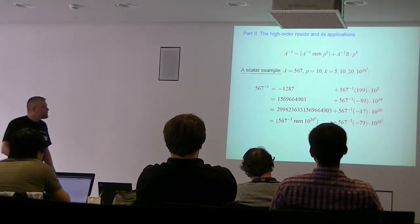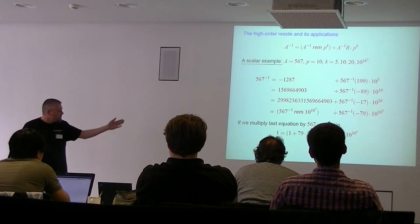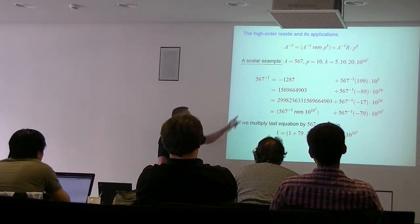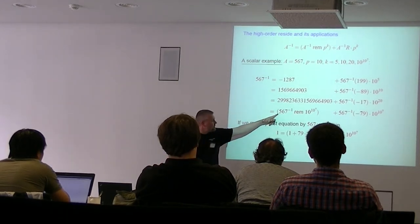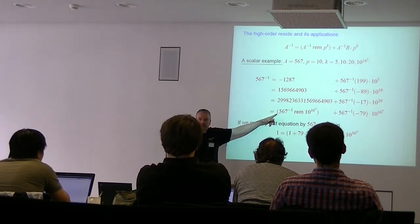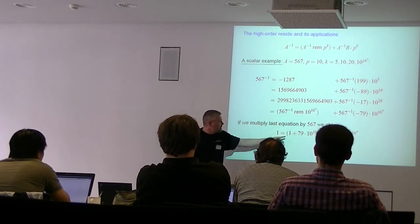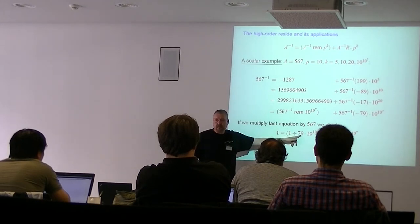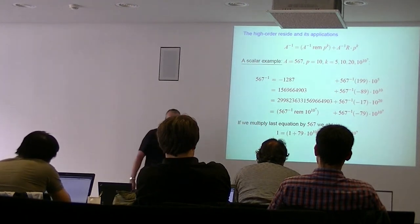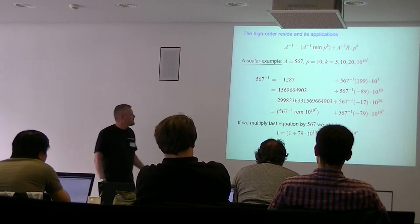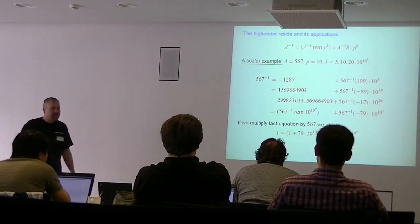Let's look at the matrix example and why the residue is small. If I multiply the equation by 567, the inverse modulo 10^(10^7) times 567 should equal 1, but it's only the inverse modulo that power — so there's stuff left over. That's exactly what the residue is: it's the negative of the leftover, which fixes things up. This shows that the residue is always going to be proportional in size to A itself.